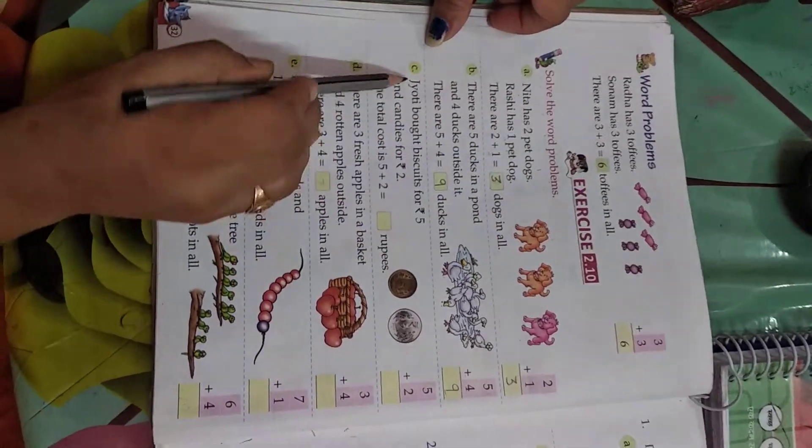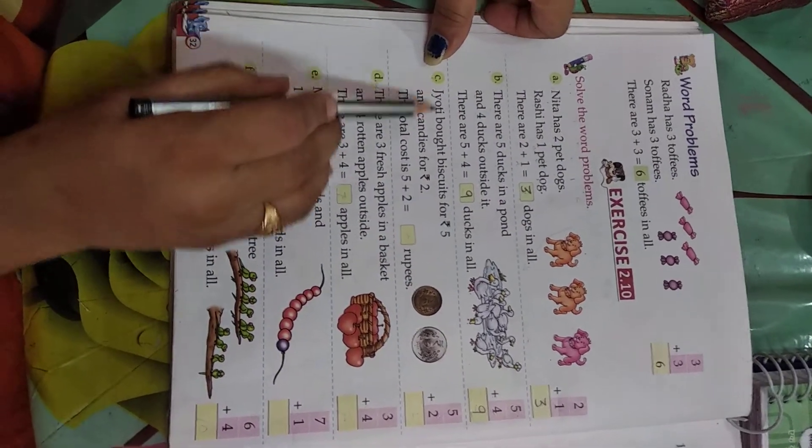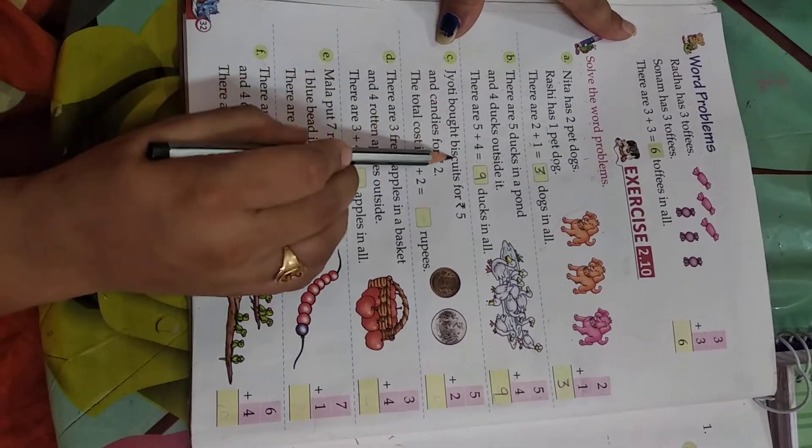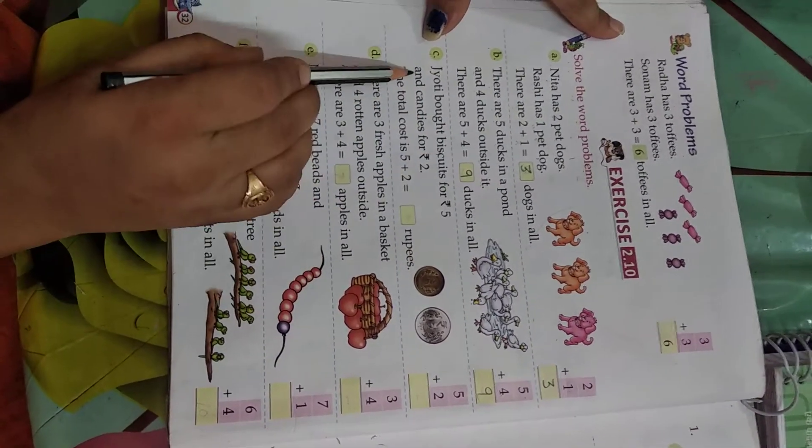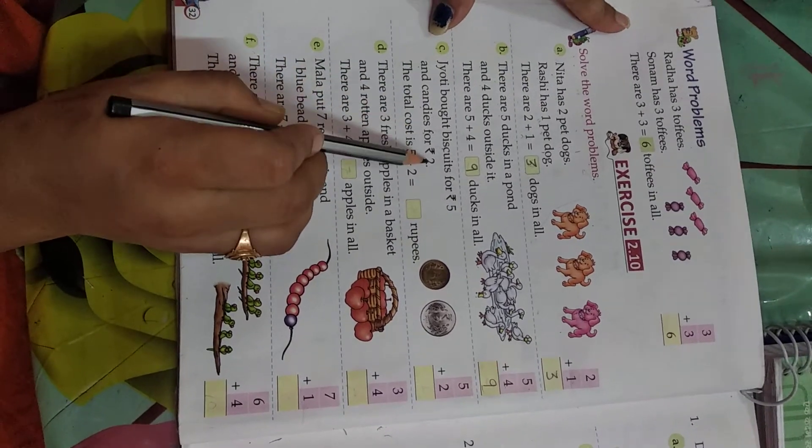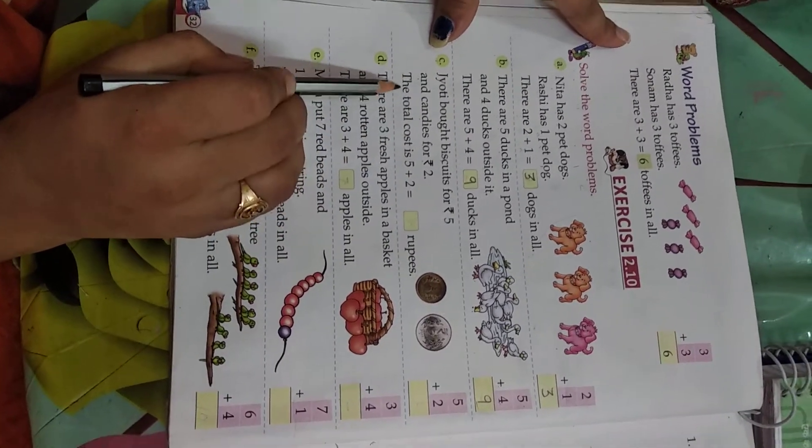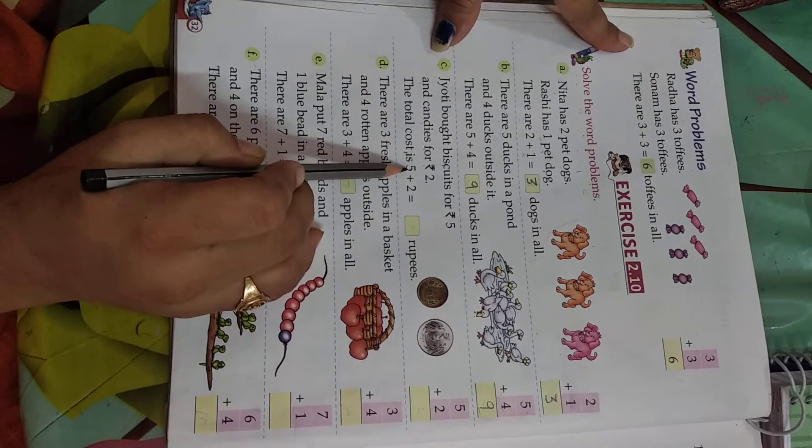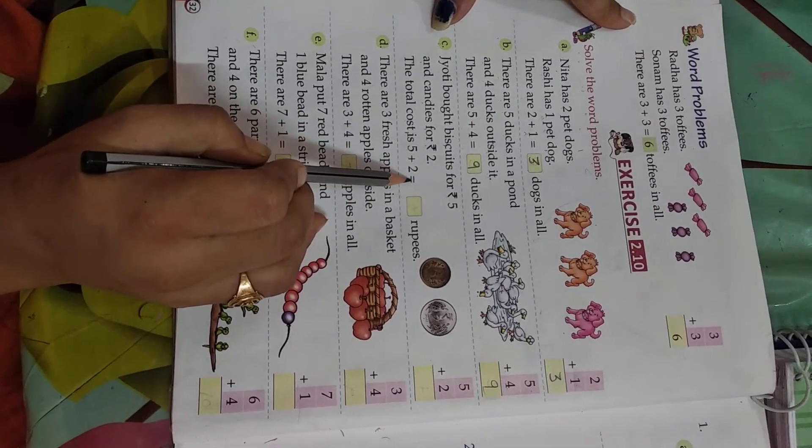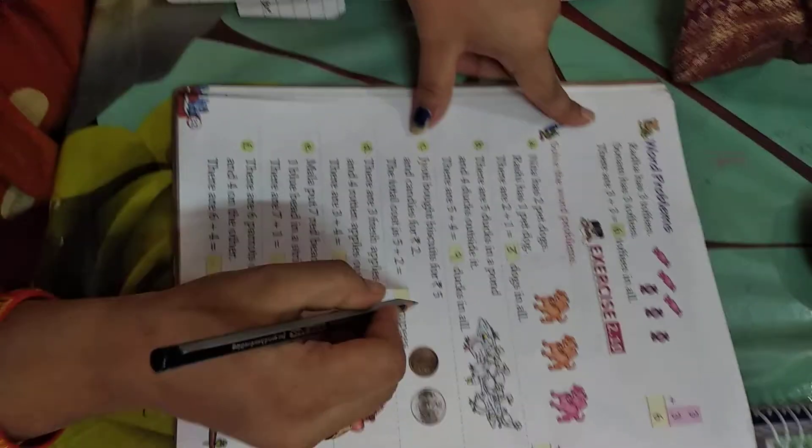Let's see number C. Jyoti bought biscuits for five rupees and candies for two rupees. The total cost of five plus two is equal to seven.